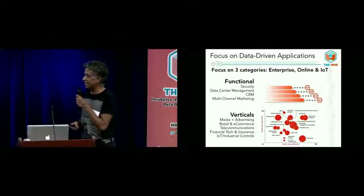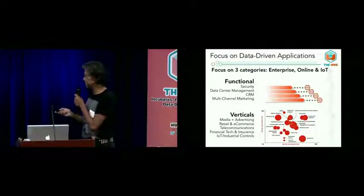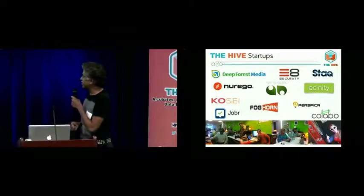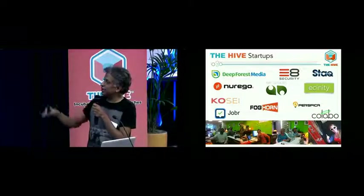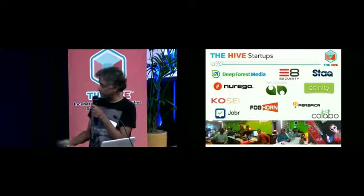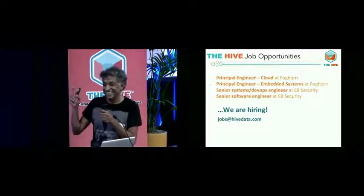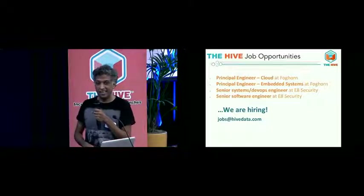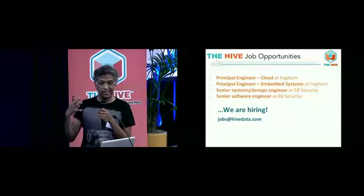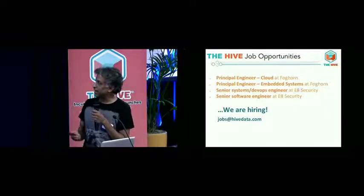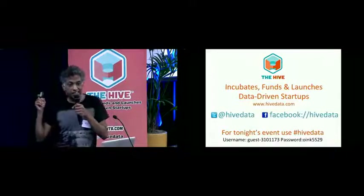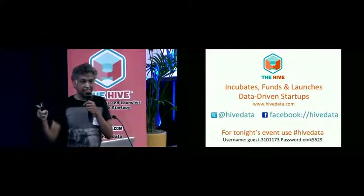We have helped start a whole bunch of companies. You'll see companies in the advertising space, retail analytics, security, Internet of Things, application development, retargeting, and so on. We are hiring. Foghorn is a company in the Internet of Things space — it's this concept of a mini micro cloud close to the factory, the home, the car. We're looking for people there as well as in one of our security companies. If you're interested, please reach out. Be a part of the conversation tonight, and if you tweet, use the hashtag HiveData, otherwise no one will know that you tweeted.